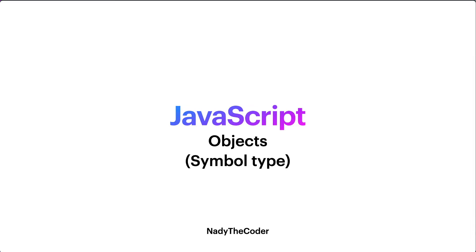Welcome to my YouTube channel Nady Decoder. Today's lecture we're going to be talking about the symbol type. We already know that we have eight kinds of data types in JavaScript, and symbol is one of them. Before diving into the lecture, please make sure you watch the previous lectures on JavaScript in order to follow along.